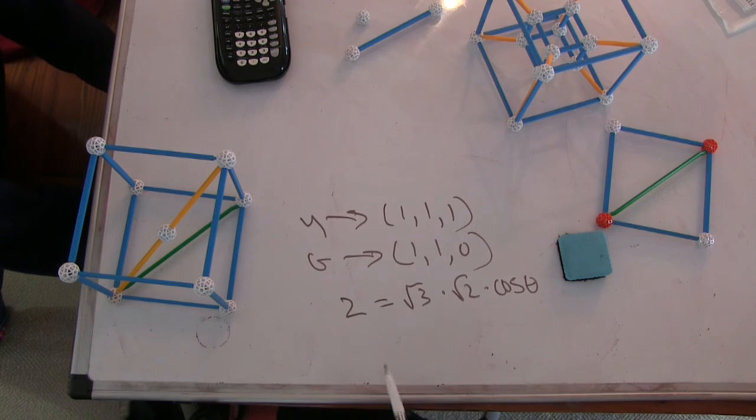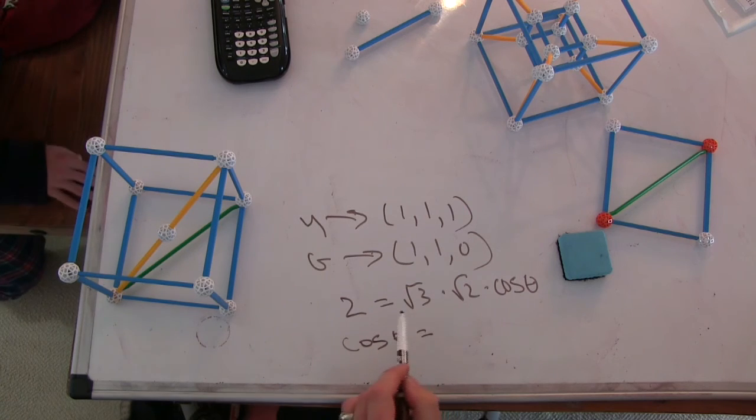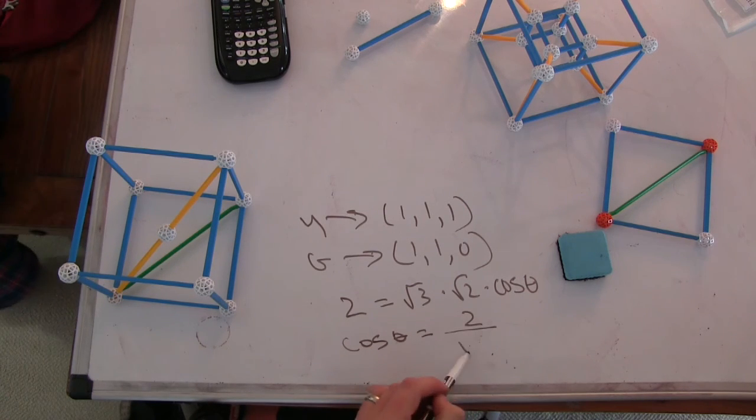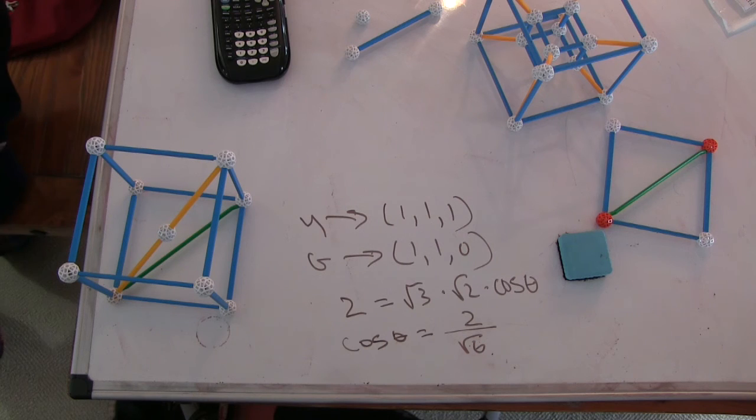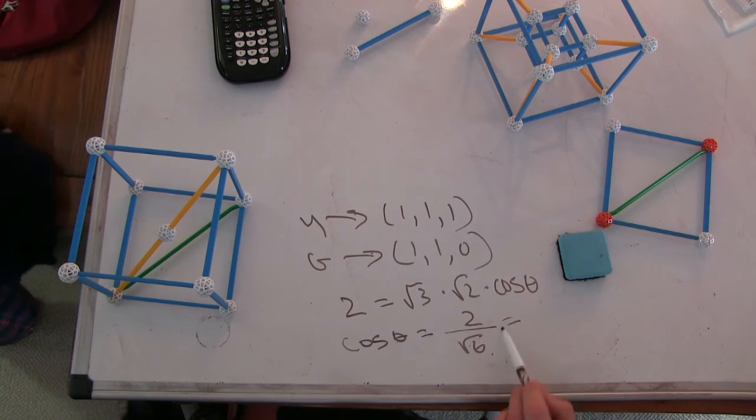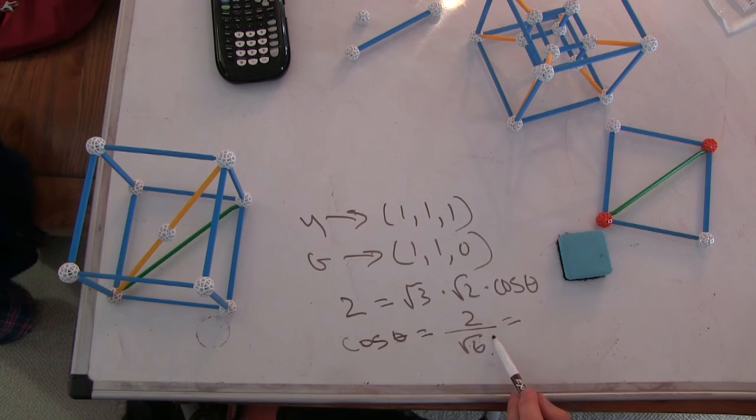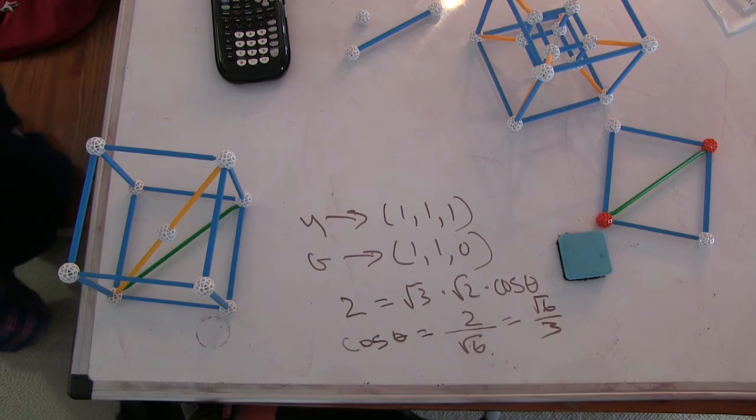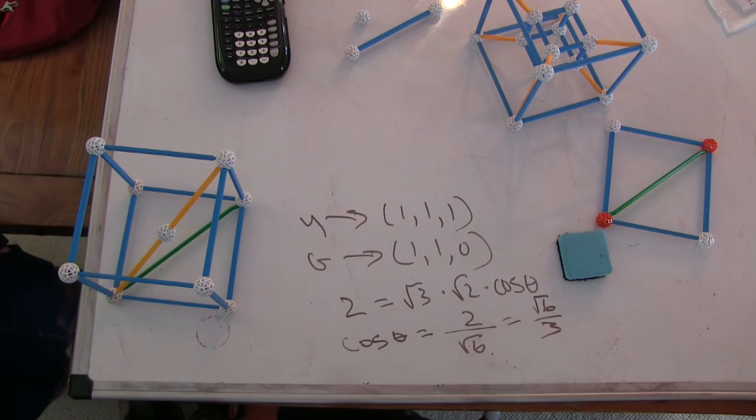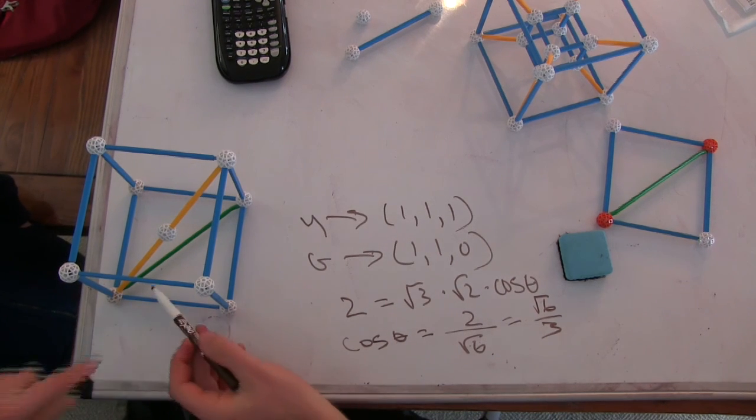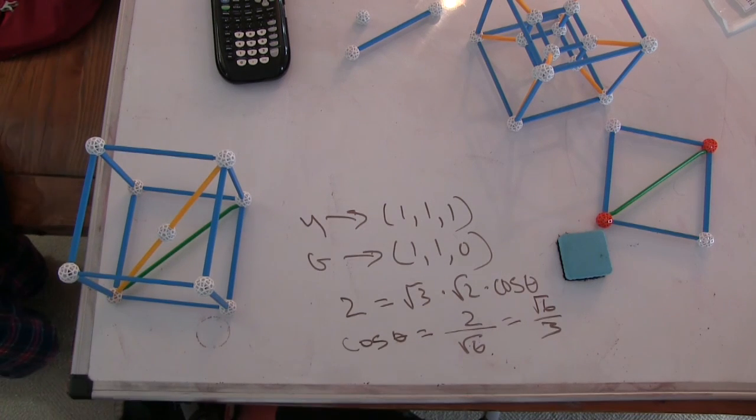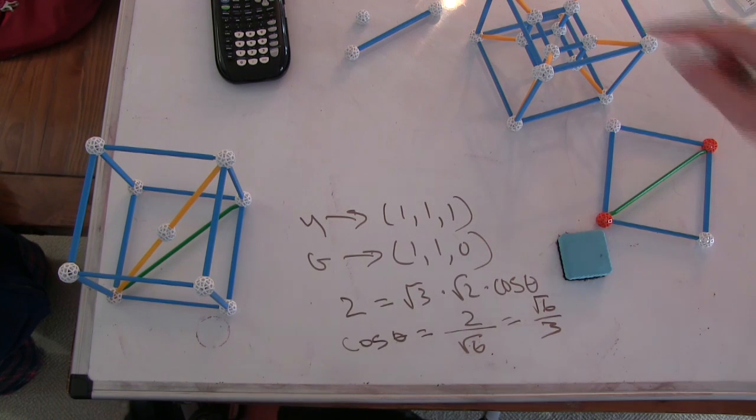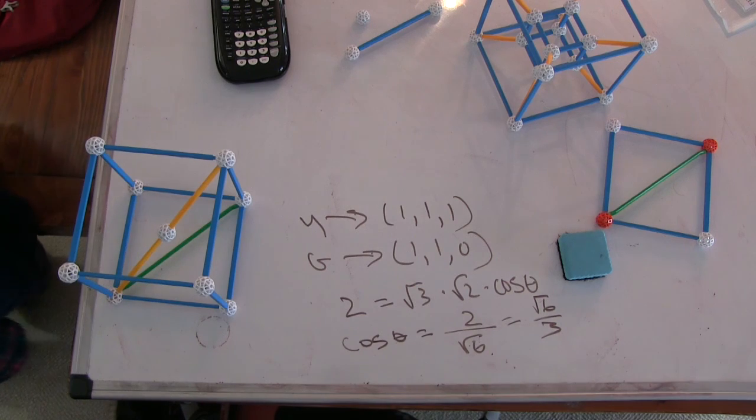Because it says cosine of theta is two over root six. Right. Which is, if I bring the root six up to the top, root six over three. Yeah. But we also see that it's root two over root three. And then you multiply that by root three and you get the same thing. Okay, good. All right. So now for the last thing, we're going to measure the long angle in the hypercube.